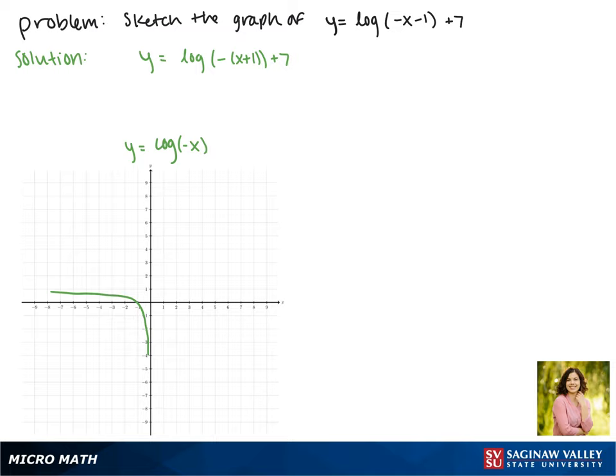Next we'll look at translations. Since we're adding 1 to x, this moves our function 1 space to the left. Now it passes through the point negative 2, 0.